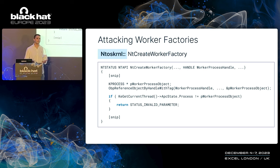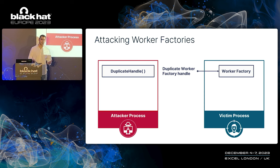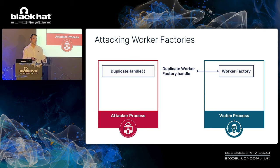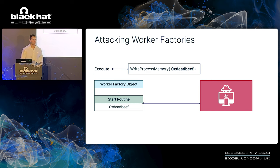Let's move on to explore other alternatives that can lead to abusing the start routine. Going back to one of the main reasons we chose the thread pool — all Windows processes have a thread pool by default, and consequently a worker factory object by default. So instead of creating a worker factory for a target process, we can simply utilize the DuplicateHandle API to gain access to an existing worker factory object belonging to the target process. However, gaining access to an existing worker factory does not let us control the start routine pointer, as this pointer is constant and cannot be naturally changed after the object was initialized. But if we can determine the start routine value, we can overwrite the routine code with our malicious shellcode.